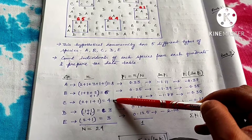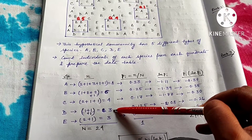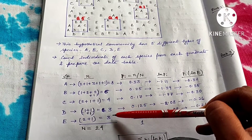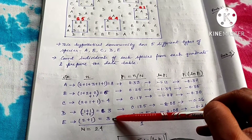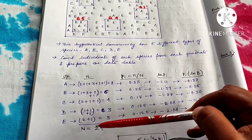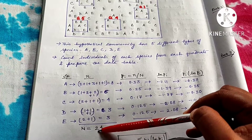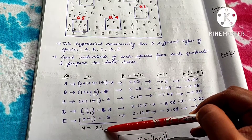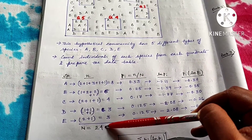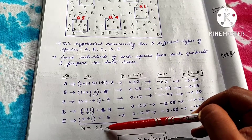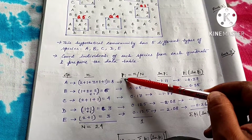For B it is 6, for C it is 4, for D it is 3, and for E it is 3. The total number of individuals of all the species across all 5 quadrats is 24.